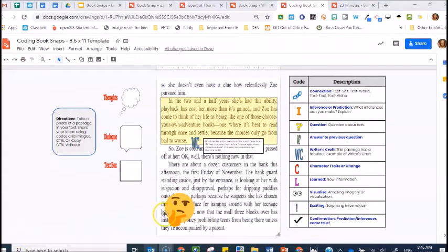In this example, I have a question about the text. So I'm going to use the question coding. Copy. Simply select paste. And I'm going to put the question mark by the image. And I'm going to use a thought bubble to show my thinking.